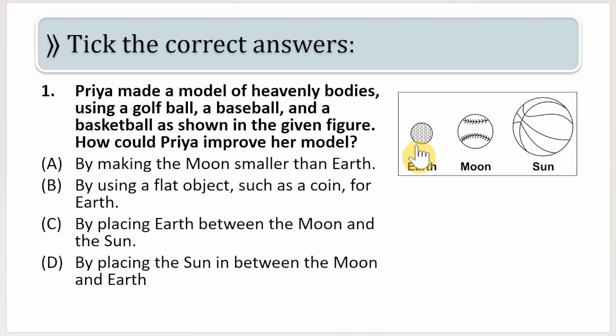Then this over here, a baseball, she has considered as Moon, and basketball she has considered as Sun. Now how could Priya improve her model? By making the Moon smaller than the Earth.